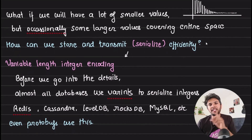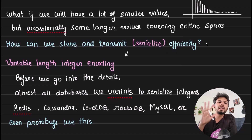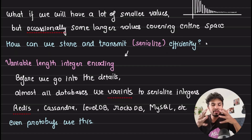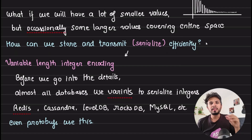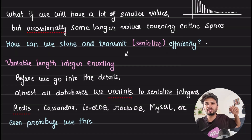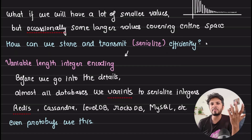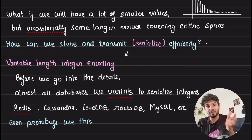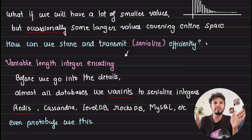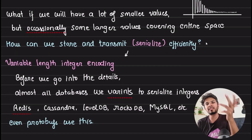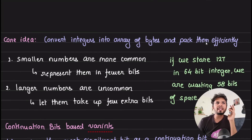That's where variable-length integer encoding comes in. Before we go into the concept, let's understand which databases use it. Almost all databases use varints to serialize integers — to store on disk or transmit to clients. Redis uses it, Cassandra uses it, LevelDB, RocksDB, MySQL — they all use it. Even Protobuf, used with gRPC to communicate between microservices, serializes integers as varints.